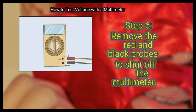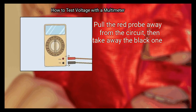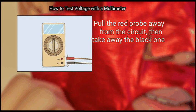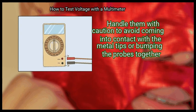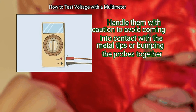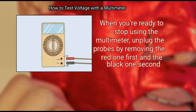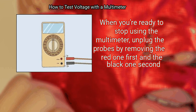Finally, remove the red and black probes to shut off the multimeter. Pull the red probe away from the circuit, then take away the black one. Handle them with caution to avoid coming into contact with the metal tips or bumping the probes together. When you're ready to stop using the multimeter, unplug the probes by removing the red one first and the black one second.